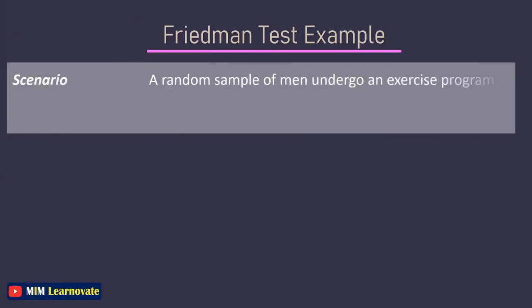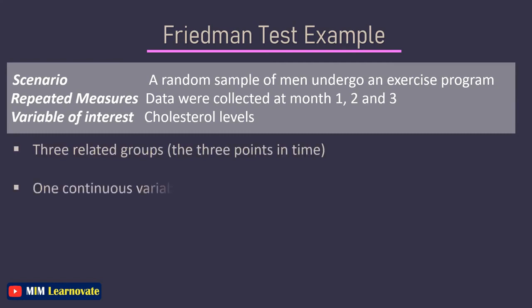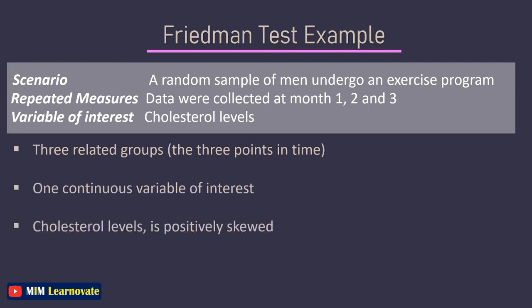In this example, a random sample of men undergoing an exercise program has repeated measures data collected at months 1, 2, and 3, with cholesterol levels as the variable of interest. We have 3 related groups — the 3 points in time — and one continuous variable of interest. After investigating our data, we determine that cholesterol levels is positively skewed, so we know to perform the Freedman Test.